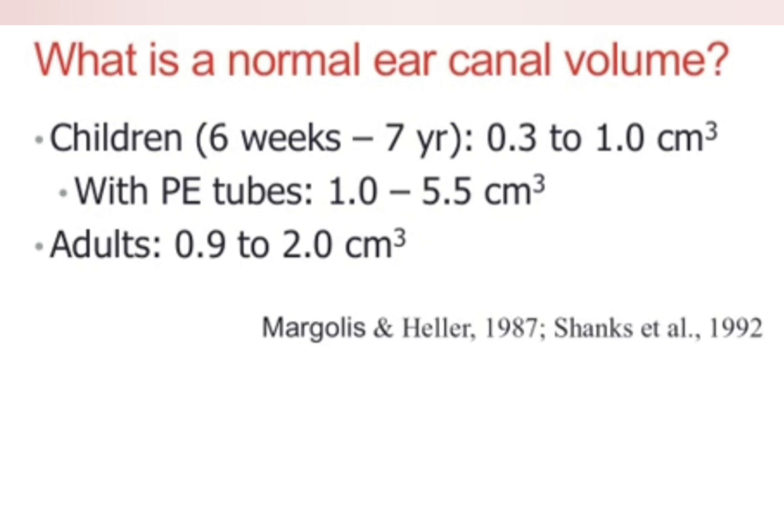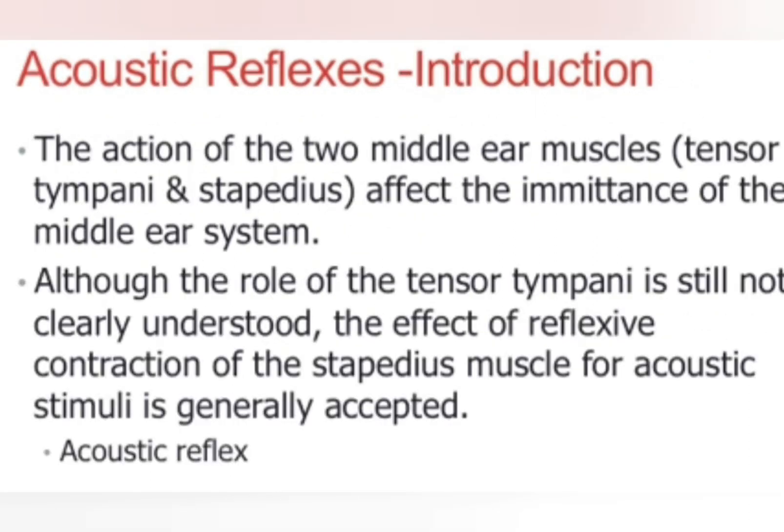Middle ear volume is important to know the ear canal volume — in adults it is 0.9 to 2 cm³. It can also help us predict whether a grommet is functioning or not, where it should be 5.5 mm³.